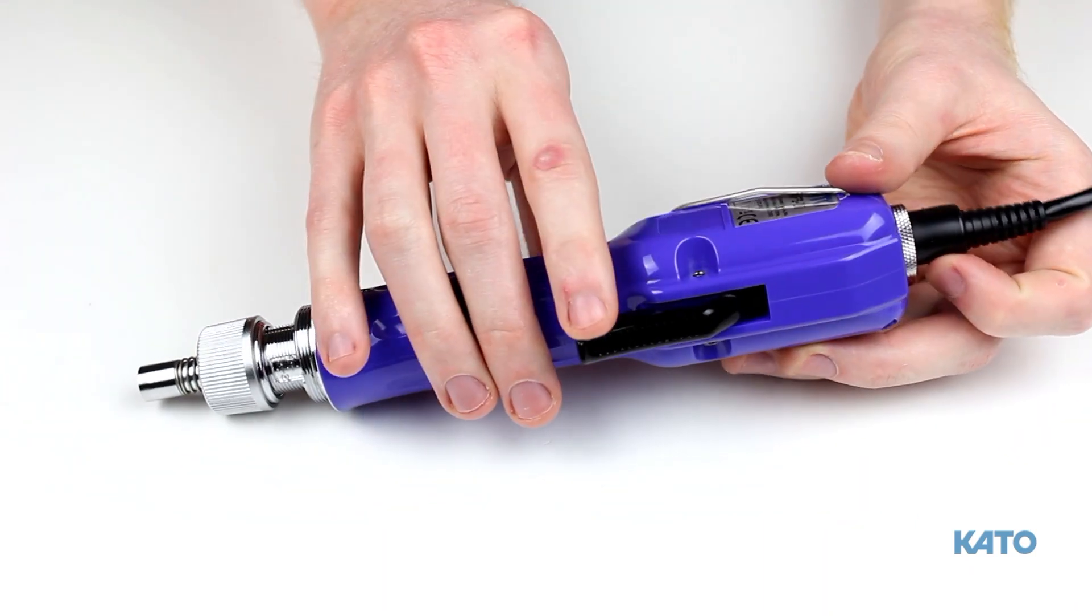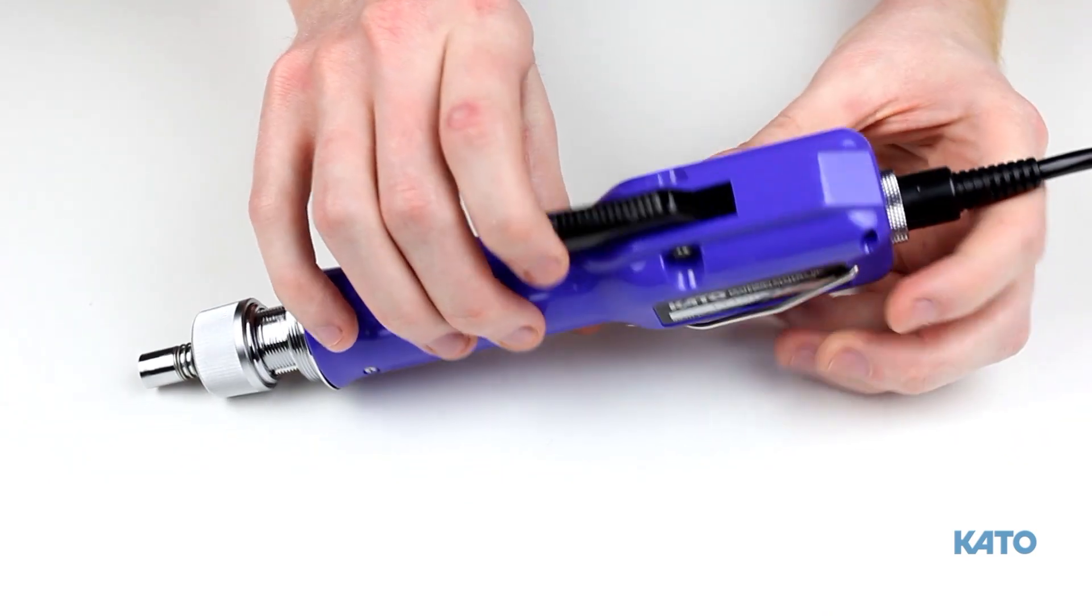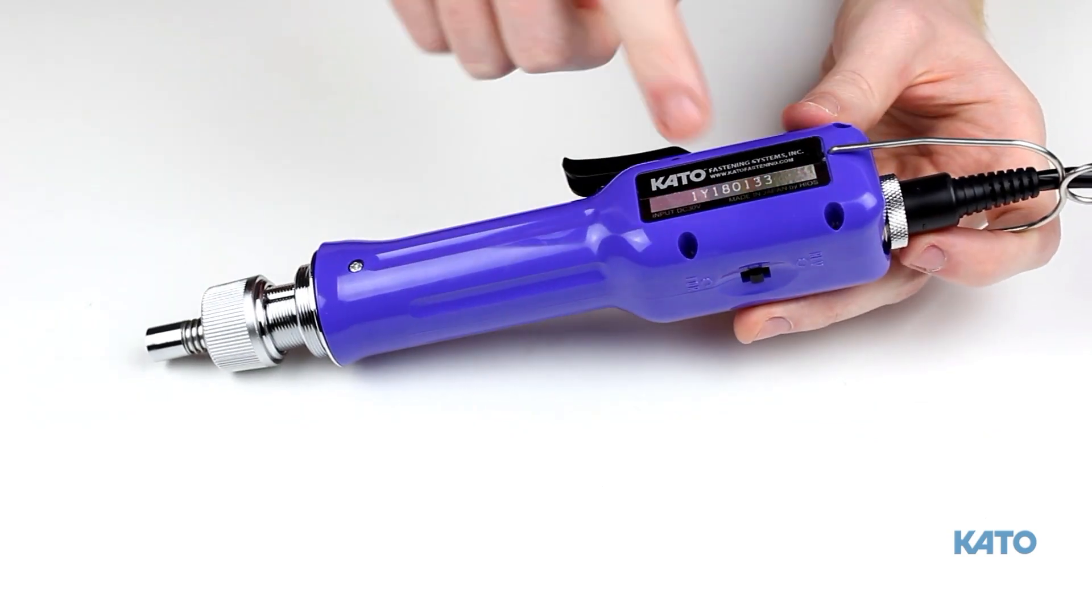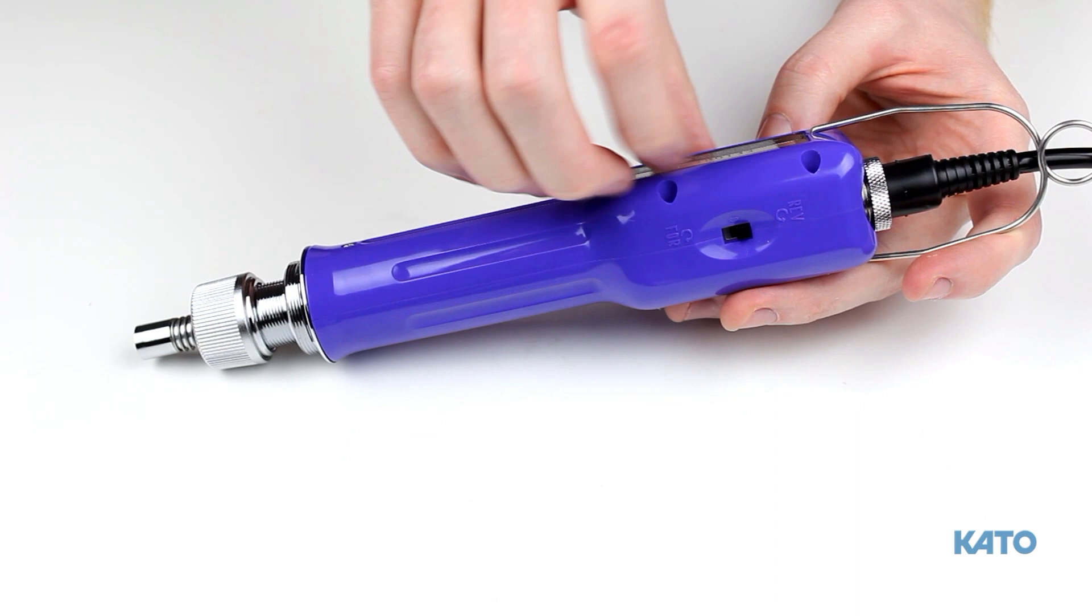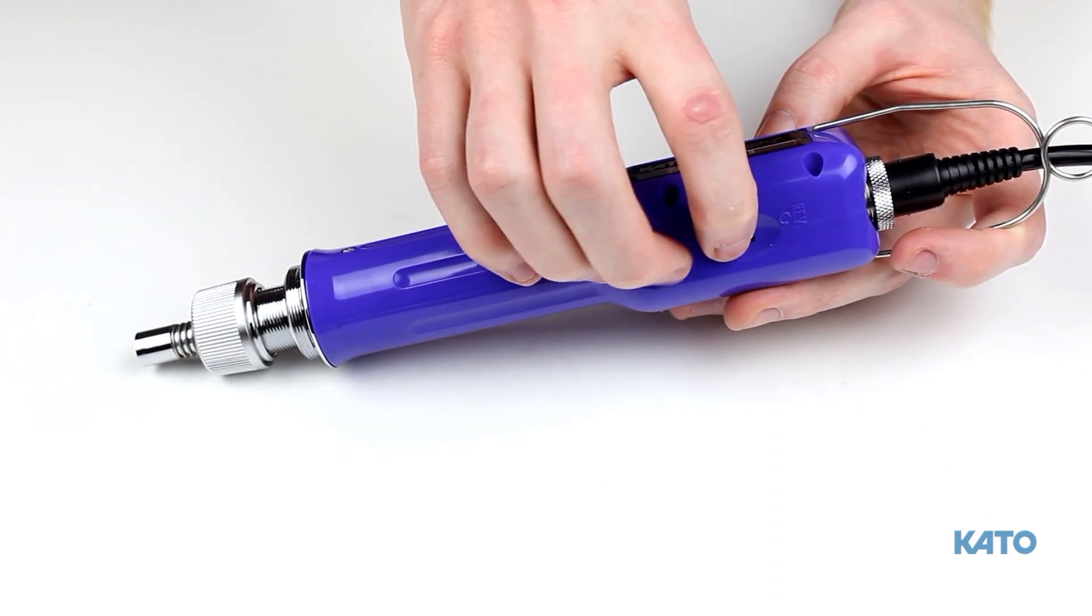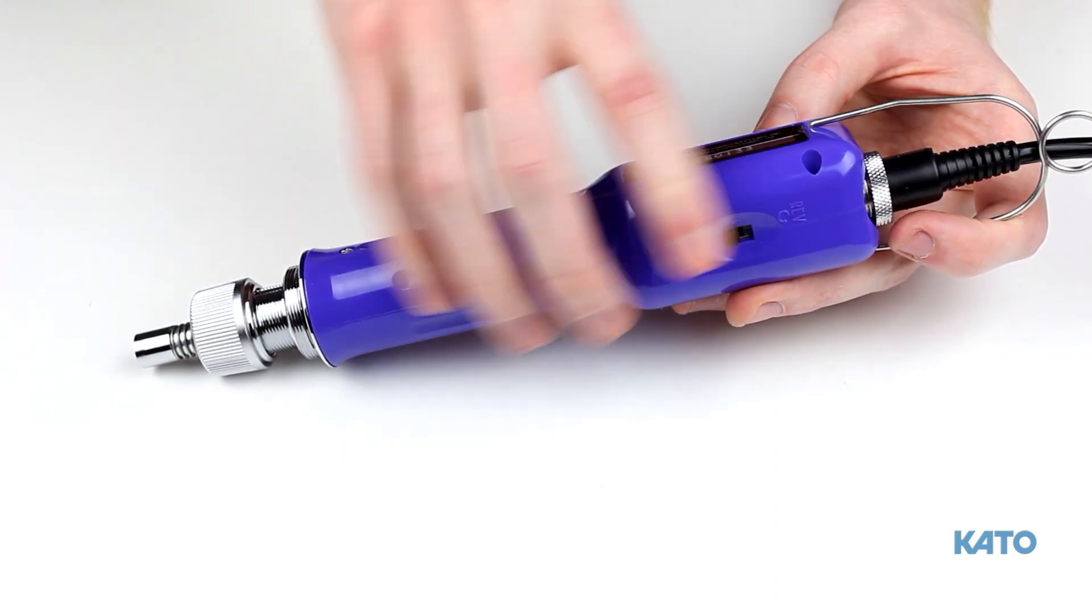Here you have the trigger. And on the back, there is a switch for forward, neutral, and reverse. Even though this is an automatic reversing tool, in case you ever need to use the manual reverse, here is the switch.